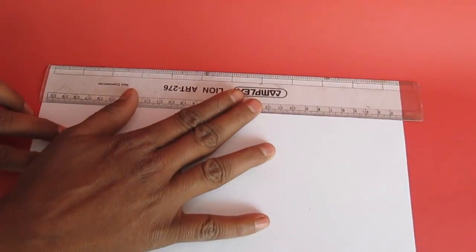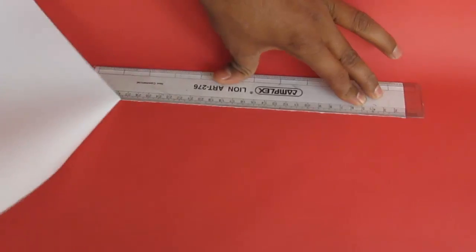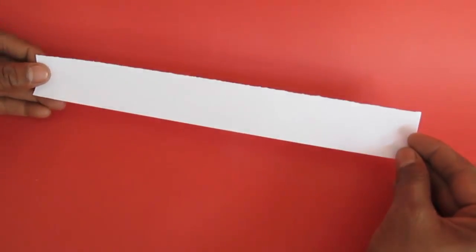You just need a strip of paper 25cm by 5cm. For that, take a scale and an A4 sheet of paper and tear off a strip on the longer side.